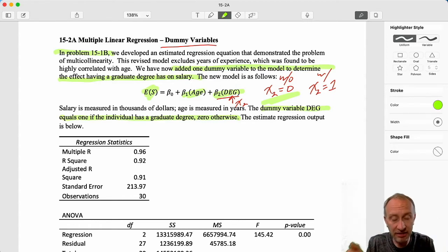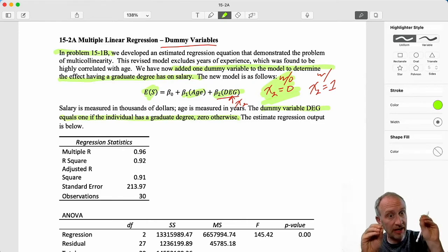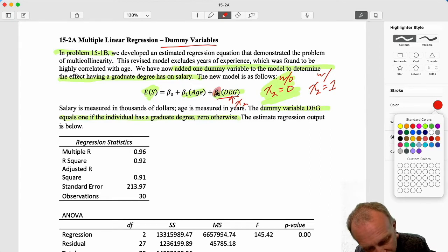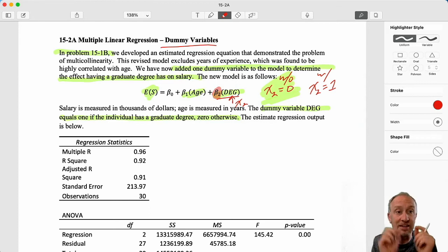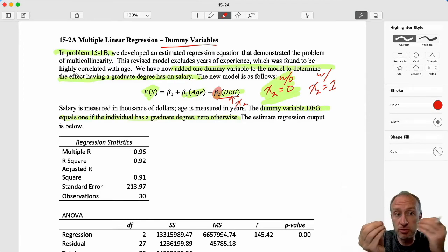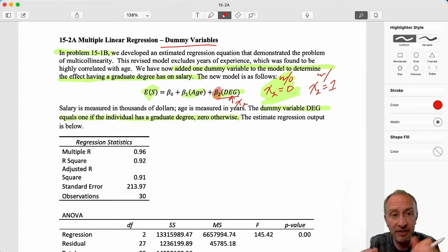That reference case is the point against which the other values are compared against. In this exercise, we have implicitly set up as our base case those people who do not have a graduate degree. Then we have those people who do have a graduate degree. What we will see is that the estimated coefficient provides us with the point estimate of the difference in those who have the graduate degree compared to those who do not, compared to that base case.